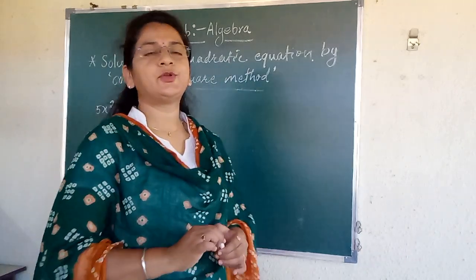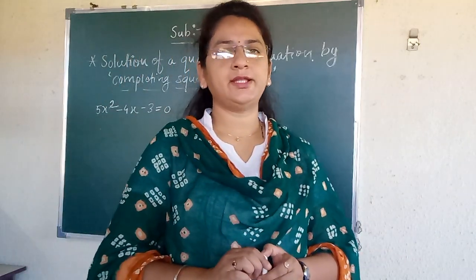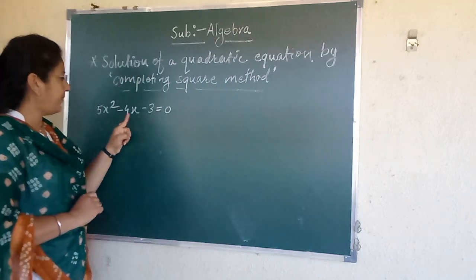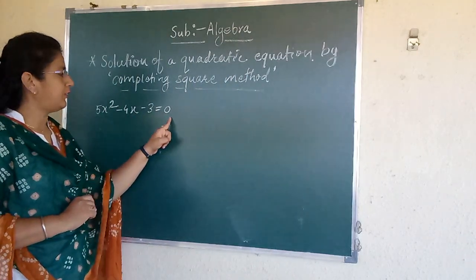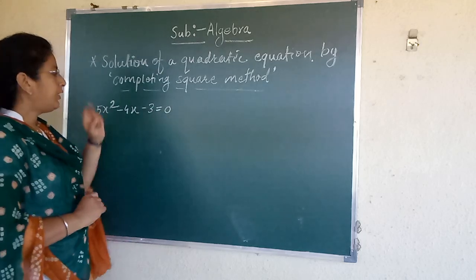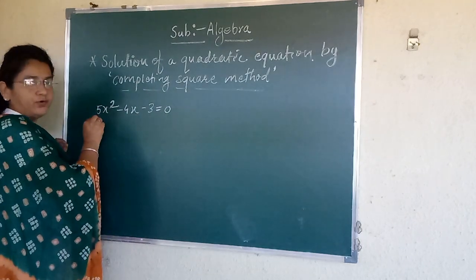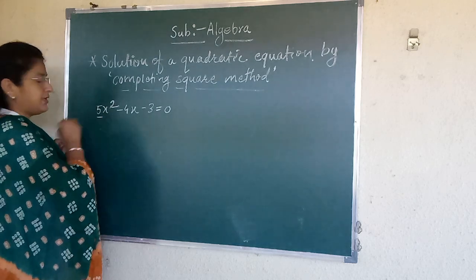Hello students, today we are going to solve one example by completing square method. See here one example: 5x² - 4x - 3 = 0. Here one change is there that coefficient of x² is not 1. Here 5 is there.